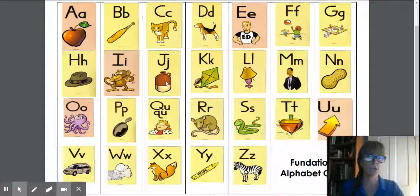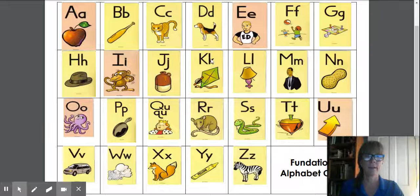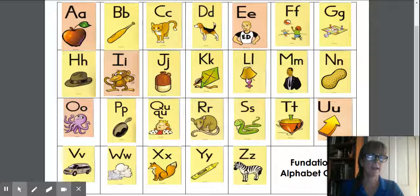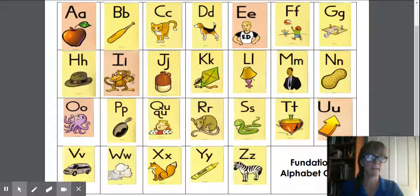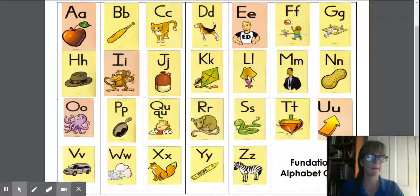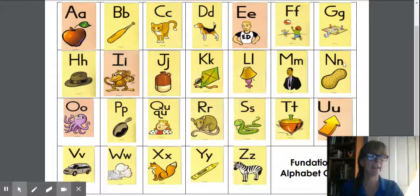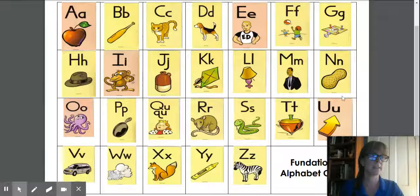J, Jug, J. K, Kite, K. L, Lamb. That is not a lamb. L, Lamp, L. M, Man, M. And N, Nut, N.